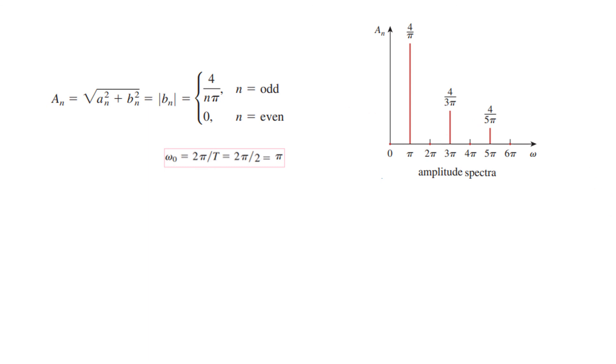And the phase spectra is very simple. We only have to plot minus 90 at n is equal to 1. So here pi minus 90. 3 pi minus 90. 5 pi minus 90. And so this is the phase spectra. So this is how you plot the amplitude spectra and phase spectra of the Fourier series functions.